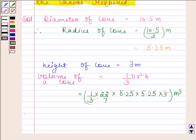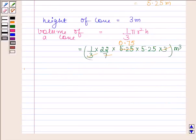On canceling 5.25 by 7, we get 0.75. On simplifying this, we get 86.625 meter cube. So volume of cone is 86.625 meter cube.